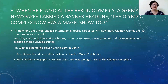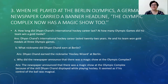And C: Why did the newspaper announce that there was a magic show at the Olympic complex? The newspaper announced that there was a magic show at the Olympic complex because of the skill Dianjanth displayed while playing hockey. It seemed as if his control of the ball was magical.